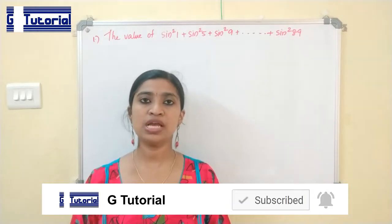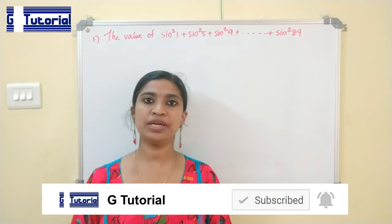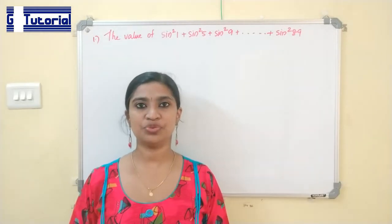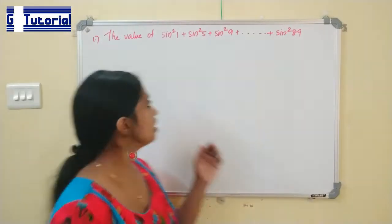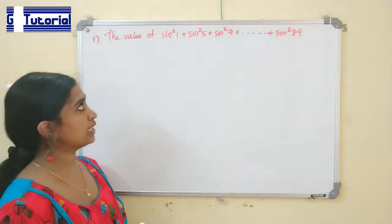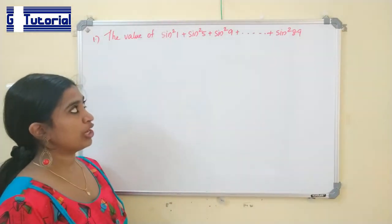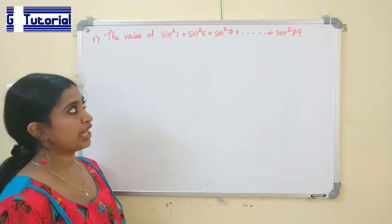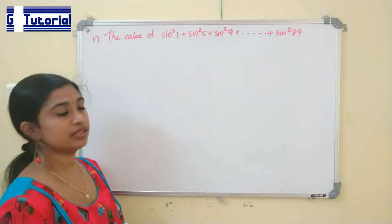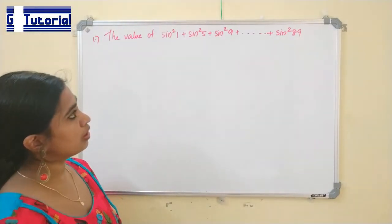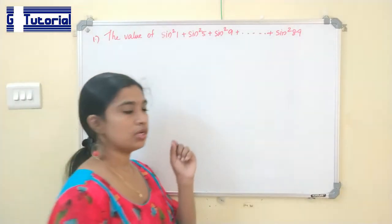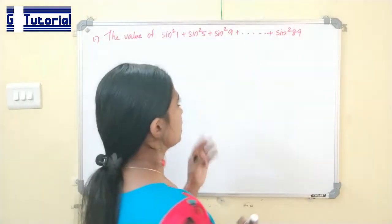If you like my videos, please subscribe to my channel for getting more RRBJ related videos. Now, let us get to the problems. This is the first question: the value of sin²1 + sin²5 + sin²9 + ... + sin²89. Before solving, you should know two things.